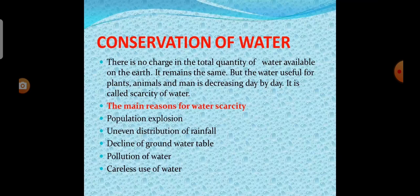Now we will see about the conservation of water. There is no change in the total quantity of water available on earth. It remains the same. But the water useful for plants, animals, and man is decreasing day by day. It is called scarcity of water. What are the reasons for scarcity of water? Population explosion, decline in distribution of rainfall, decline of groundwater table, and pollution of water.